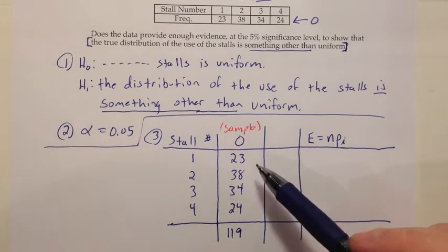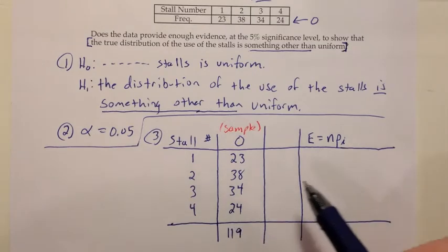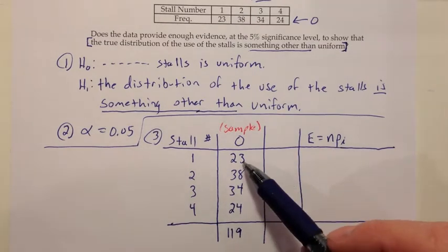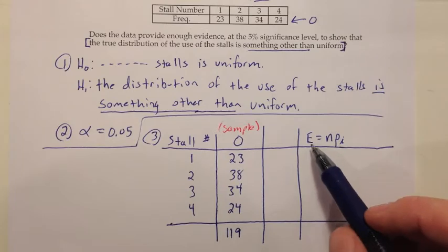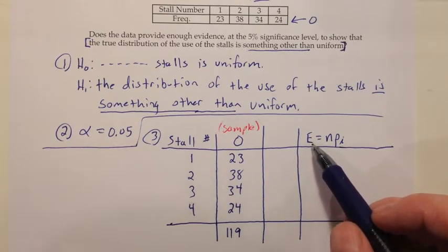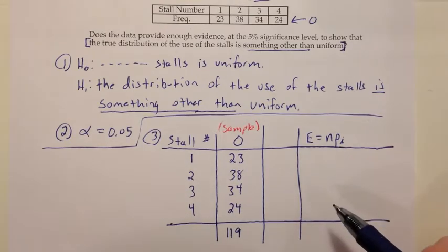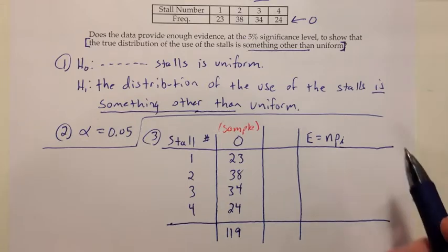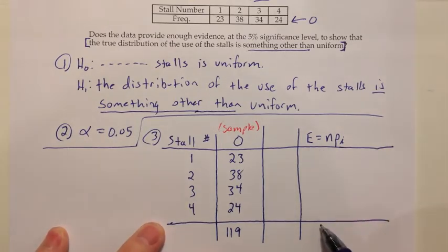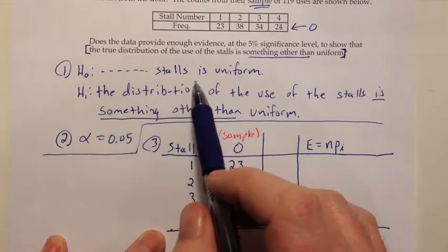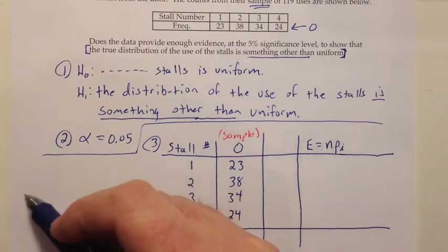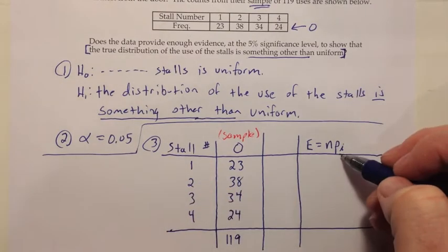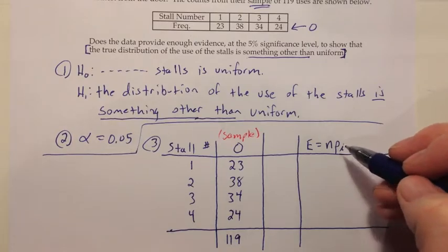But when we do E, which stands for expected frequencies, I told you that we should take N times PI, where PI is the probability of success for each one of these categories. Sometimes people are tempted to take 23 over 119 or something to use the percentages. But that's not quite correct. When you think about E, it stands for the expected frequency. But the more full phrase there is it stands for the frequency we would expect to see if H0 is a true claim.